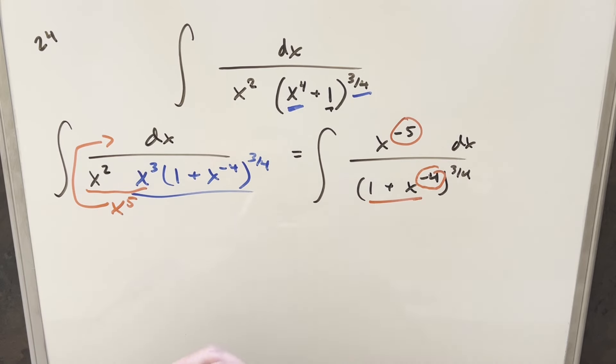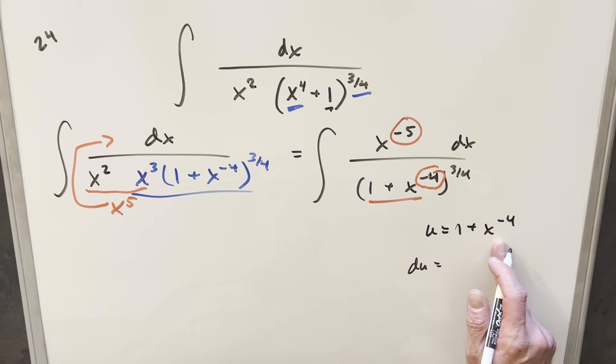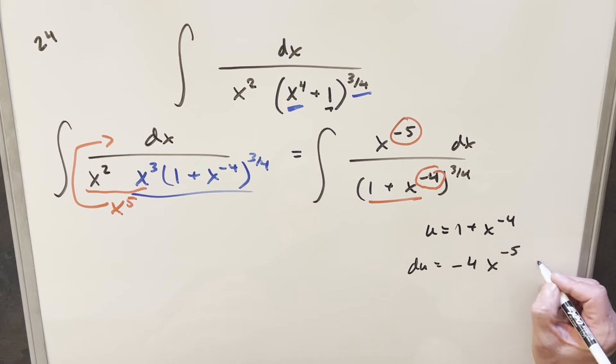So when I do my u-substitution, let's just make it for this whole, we'll make the u-substitution for 1 plus x to the minus 4 here. Then I'll take a derivative, so the du value, derivative of 1 is 0, derivative here is going to be minus 4 x to the minus 5 dx.